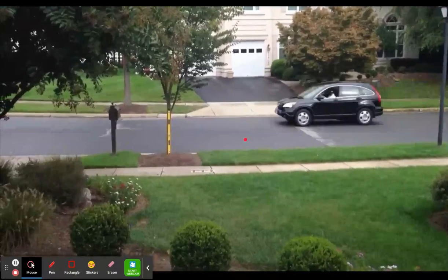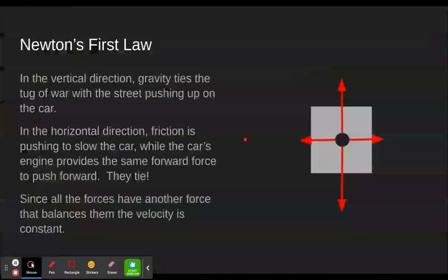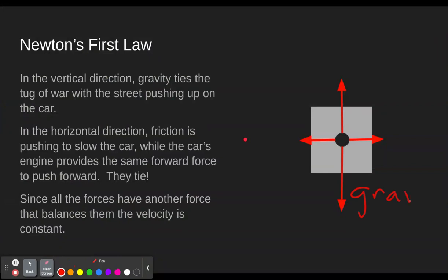And one last constant velocity. We see a car driving along the road at constant velocity. So what do we have here? Well, once again, we have gravity and the road pushing equal and opposite. So they are tying the tug of war. These are balanced forces in the vertical direction. In the horizontal direction, looks like we had friction trying to slow the car down. We'll just say the engine trying to speed it up. And so it's balanced in the horizontal direction. And since everything is balanced, that means the velocity is constant.